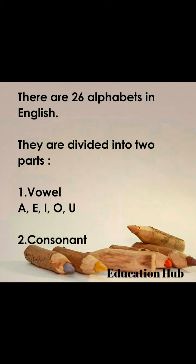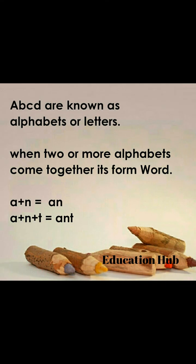The rest of the alphabets are consonants. A, b, c, d and so on are known as alphabets or letters. Both capital letters and small letters are available in English. We always start our sentence or a word with a capital letter and then after we use small letters.